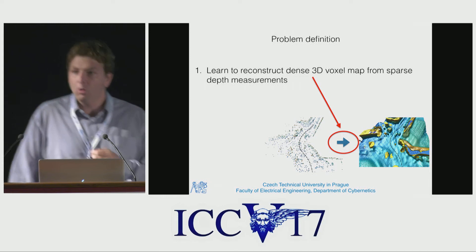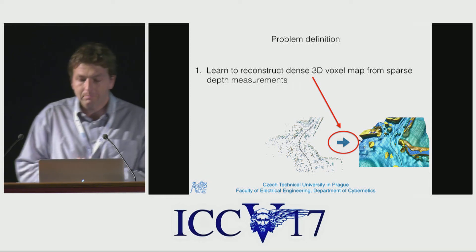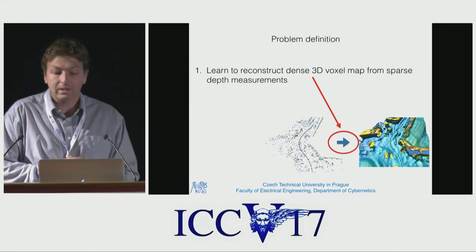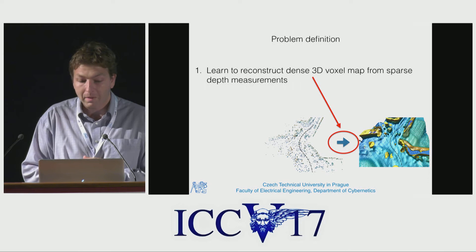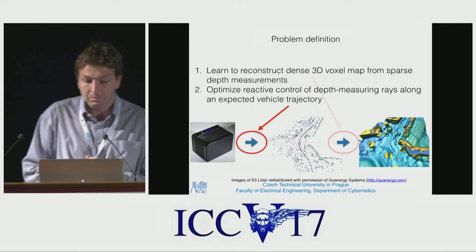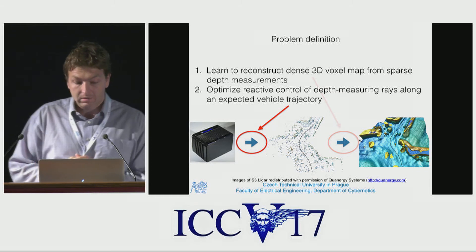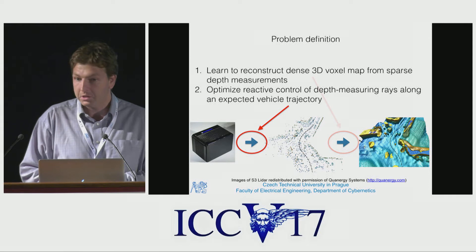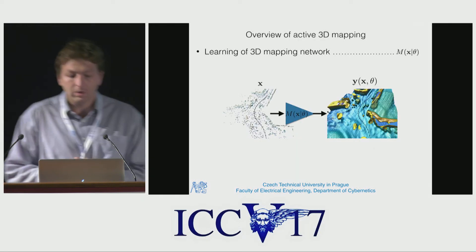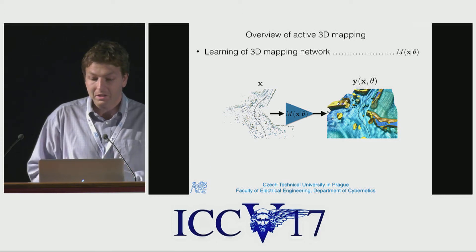Since we don't have an autonomous car, we focus on an artificial goal in which we try to learn to reconstruct dense 3D voxel maps from sparse depth measurements, and simultaneously optimize reactive control of depth measuring rays along some expected trajectory of the vehicle. The overview of the proposed pipeline for active 3D mapping is as follows.